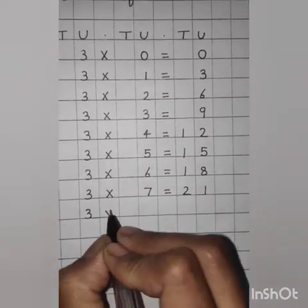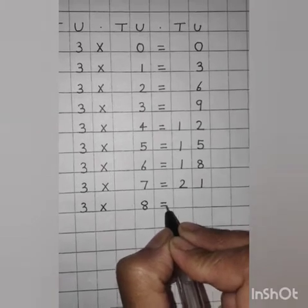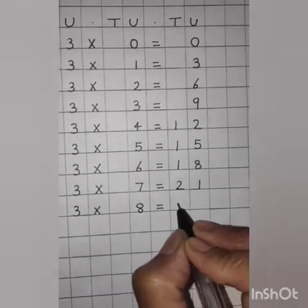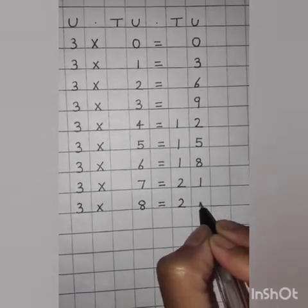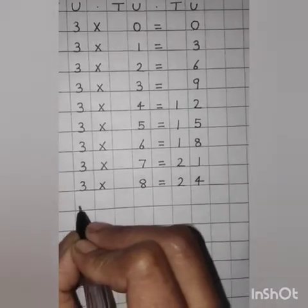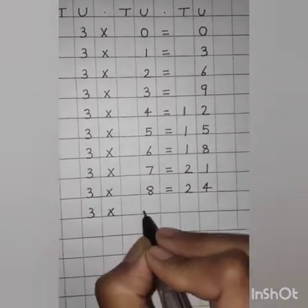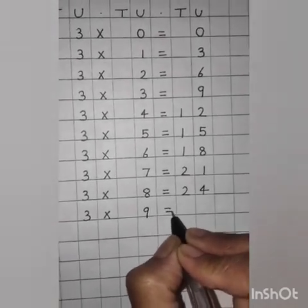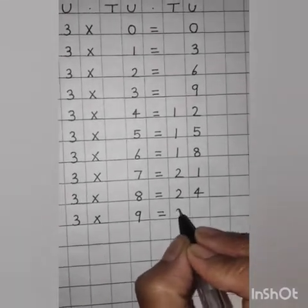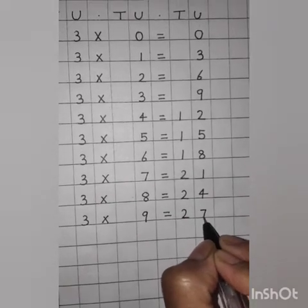Three. Eight. Equal to. Three eights are? Twenty-four. Three. Multiply. Nine. Equal to. Three nines are? Two. Seven. Twenty-seven.